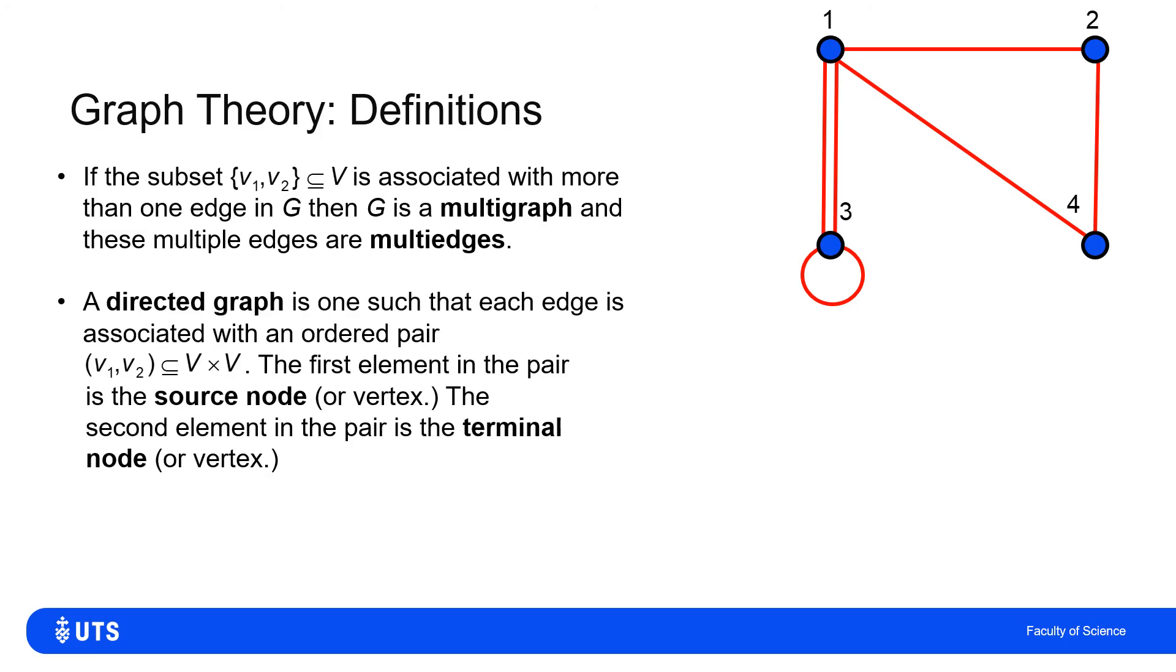Another category that we can have is, we can start to, instead of having sets containing two elements to define the two ends of an edge, we can have an ordered pair instead. The difference between a set and an ordered pair is, of course,